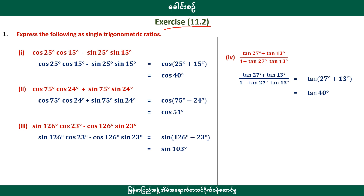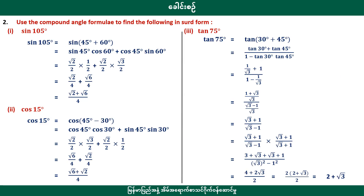Express the following as a single trigonometry ratio. It is another single trigonometry ratio. This is the same as 1. The same way — the same is a triangle. The same is a triangle, the same as 1. This is a rectangle, which is 1.